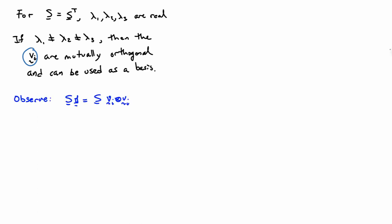So let's just look at one observation that comes out of this. Suppose I'm going to multiply s by the identity. So that's just equal to s. And I'm going to represent the identity as vi outer product vi. And that's because I'm using the v's now. We're thinking of the v's as a set of basis vectors for a coordinate system.